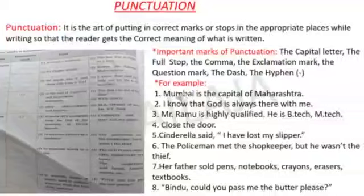The comma is used to mark off a quotation from the rest of the sentence in direct speech. For example, Cinderella said, comma, I have lost my slipper. So the direct words are separated by a comma — said, comma, I have lost my slipper.